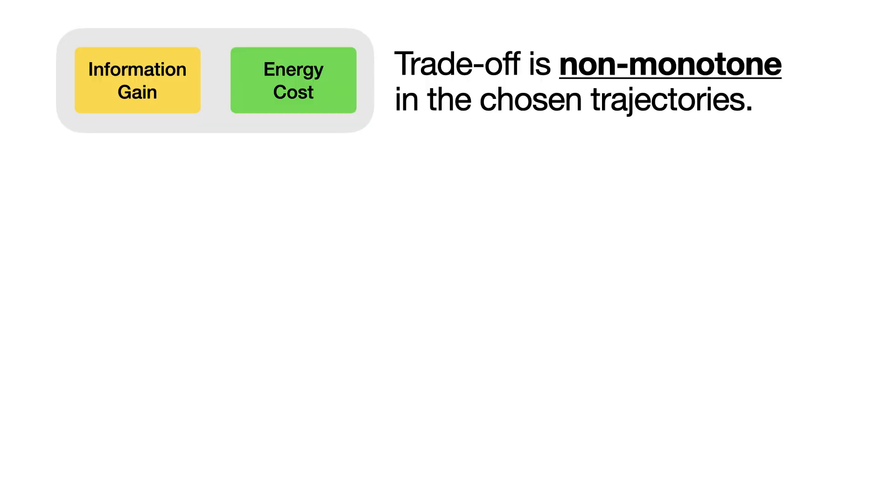Optimizing the trade-off directly, however, is challenging because it makes the objective non-monotone, which means that adding more trajectories may worsen the objective by incurring high energy cost.